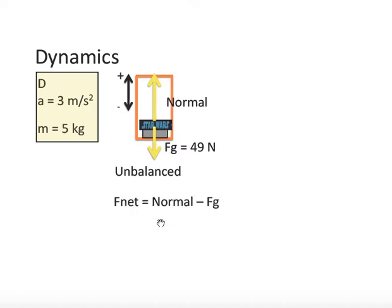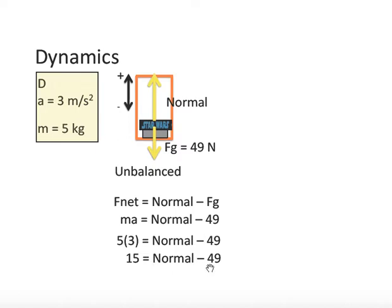So once again, we have F net equals normal. Normal acts upwards. Subtract gravity that acts downwards. Normal is in the direction of motion. That's why it's positive. Gravity is negative because it opposes the motion. And it's accelerating upwards. F net is always MA. This time, the acceleration is 3. 5 times 3 is 15. We have to bring the 49 over. Sometimes students make a simple error and they divide by 49. But we have to add 49 to each side of the equation. And we end up getting 64 newtons.